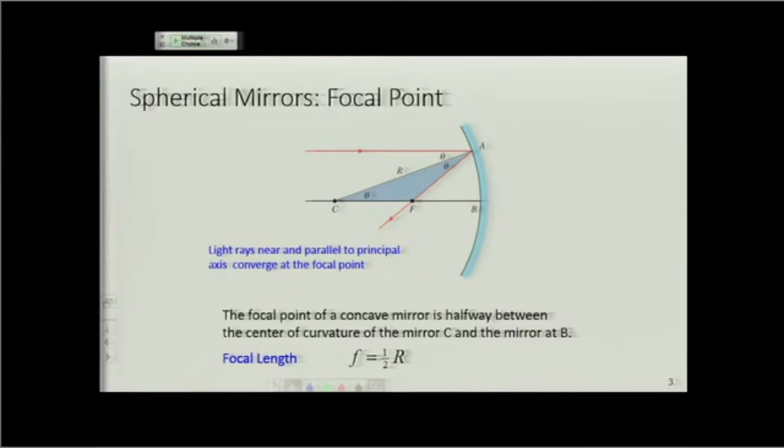So the focal length of a mirror is the distance from the surface of the mirror to this point F, the focal point. And that distance is exactly half the radius of curvature of the mirror. So the focal length is half the radius. This is true regardless of whether it's a concave or a convex mirror. The distance from C to B is also equal to the radius because B is a point on the surface of the mirror.